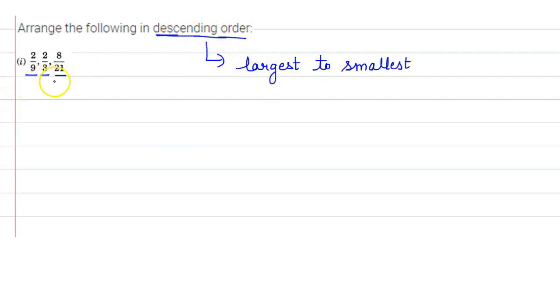So let us make their denominator same first. How? By finding their LCM. So in the denominator we have 9, 3, and 21.